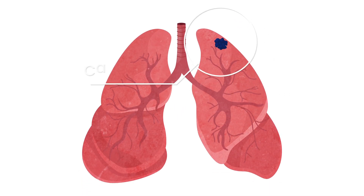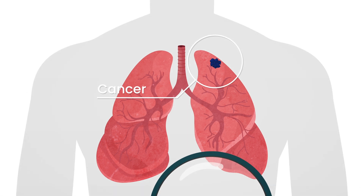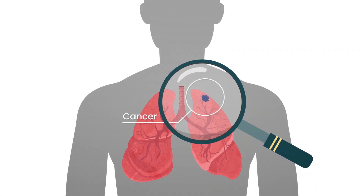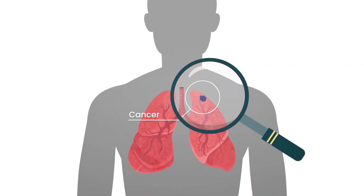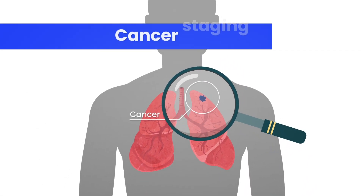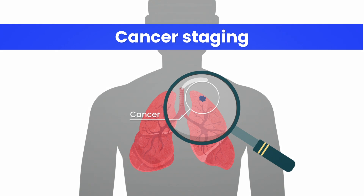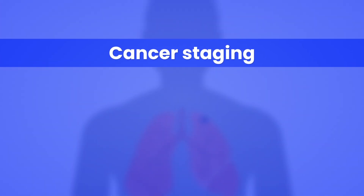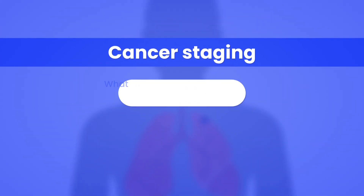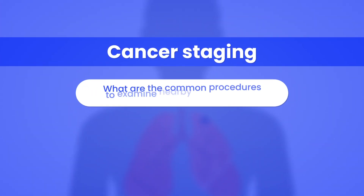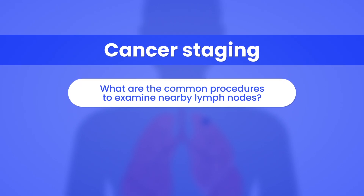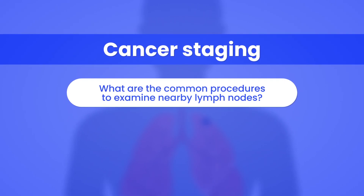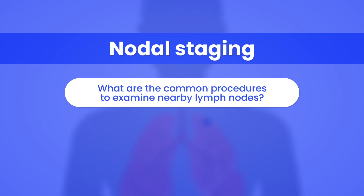When someone is diagnosed with cancer, it's important to know if and where the cancer has spread. This is called cancer staging. In this video, you'll learn about the common procedures to examine nearby lymph nodes that will help doctors stage your lung cancer. This is called nodal staging.